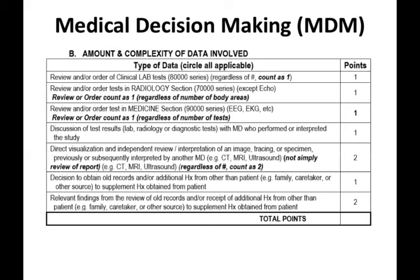The second category is how much data am I reviewing. If you look at one blood test or multiple blood tests, you get one point. For radiology scans, regardless of how many, you get one point. Any direct visualization or independent review would give you two points — heightening your medical decision making. Obtaining a history from outside of the Epic system or from a family member or caretaker also gives you additional points. For this example, we'll check off one lab and one radiology, giving a 'low' in this category.